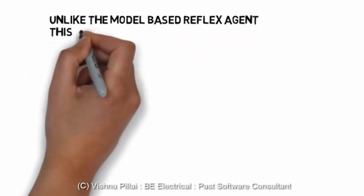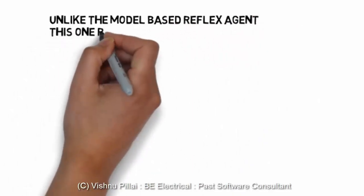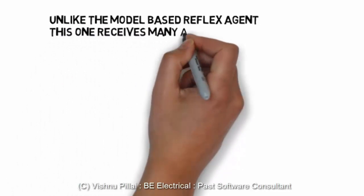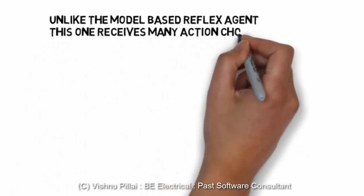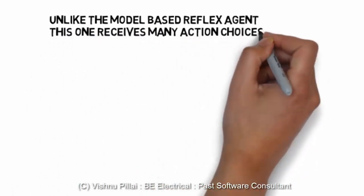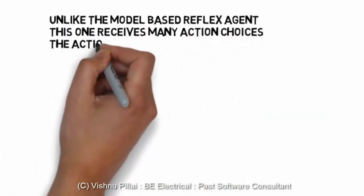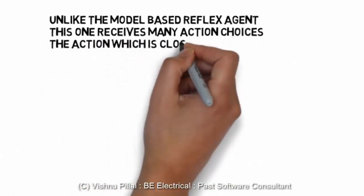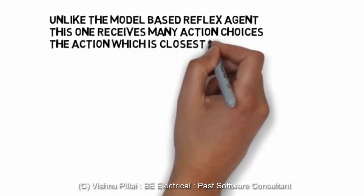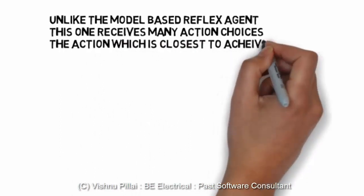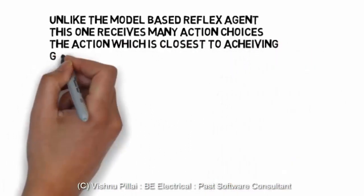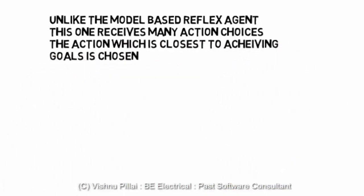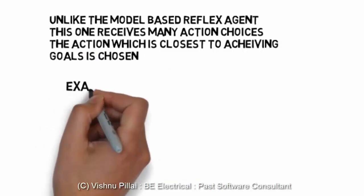Unlike the model-based reflex agents, this one receives many possible actions, and the action which the agent chooses is based closely on whichever action will help the agent achieve the goal more efficiently.